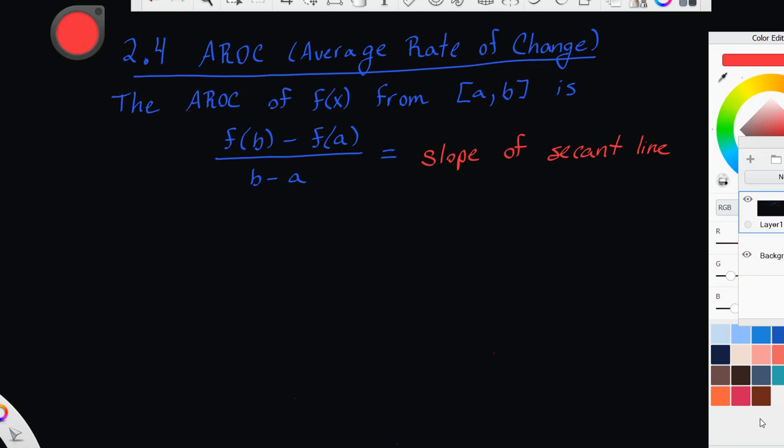The average rate of change of a function f(x) from a to b is f(b) minus f(a) divided by b minus a, which is also known as the slope of the secant line.